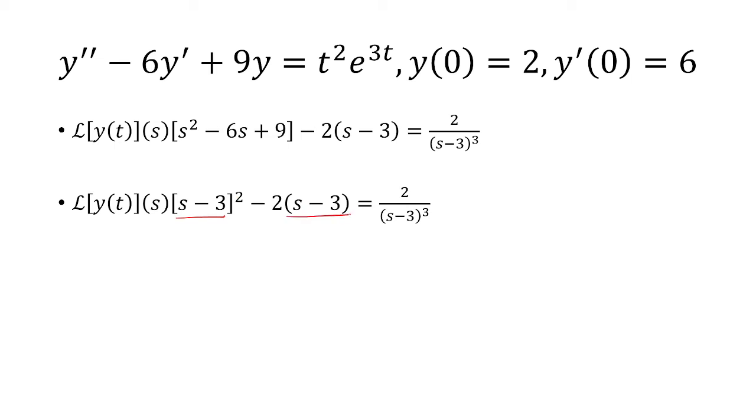And notice that both of these terms have s minus 3 as a factor. So I'm going to pull that out, and I'm left with s minus 3 times the Laplace transform of y of t for the first term. And then for the second term we have to multiply it by negative 2.